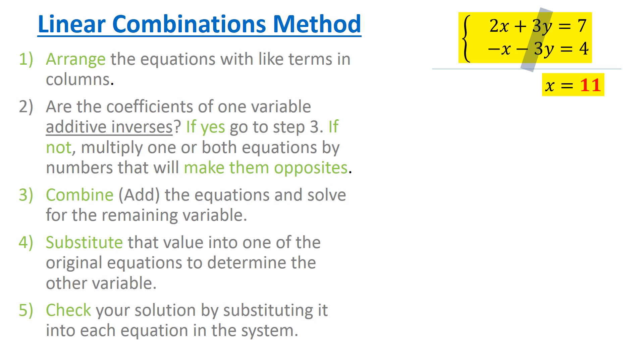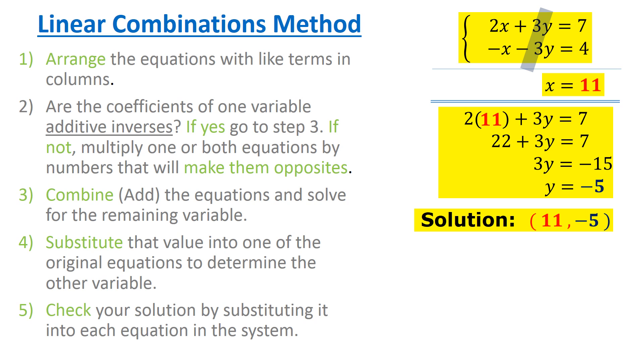Step four, to solve for the other value, we're going to substitute x equals 11 into one of the original equations. You can choose whatever equation you want. We're going to substitute that 11 into the first equation. Seems a little bit easier. And here you just go ahead and solve for y. 2 times 11 is 22. Subtract 22 from each side and then divide both sides by 3. We get that y equals negative 5. We have our solution. It is 11 for the x value and negative 5 for the y value.